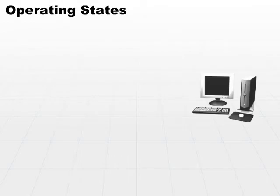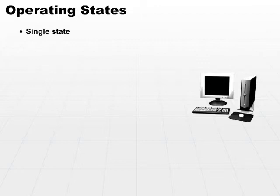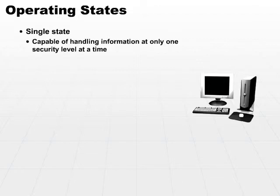A specific machine can operate in one of several states. Basically, there are two separate states with respect to security. There is a single-state operation mode. The single-state is a mode in which a system is capable of handling information at only one security level at a time.